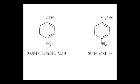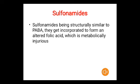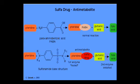Sulfonamides are structurally similar to para-aminobenzoic acid. Being structurally similar to PABA, these sulfonamides get incorporated to form an altered folic acid, which is metabolically injurious. This picture shows the altered folic acid formation due to incorporation of sulfonamides.